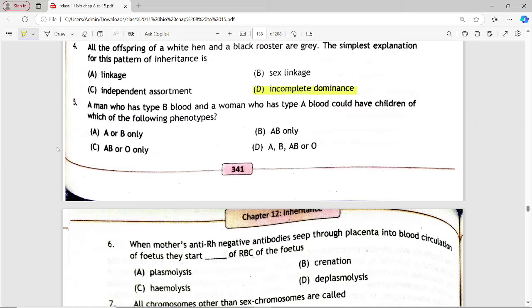Next is: A man who has type B blood and a woman who has type A blood could have children of which of the following phenotypes? Options are: A or B only, AB only, AB or O only, A, B, AB, or O. Answer is option C, A, B, or O only.